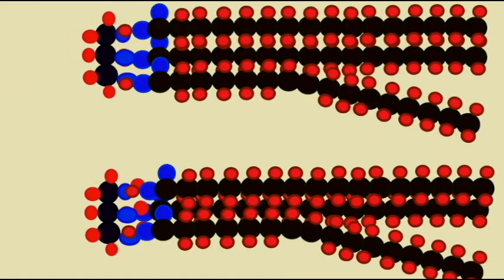The kinks in the hydrocarbon chains formed by the double bonds in unsaturated fatty acids make it more difficult to pack them together. Therefore they are more likely to be liquid at room temperature and oils.